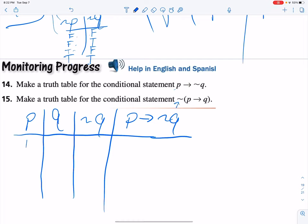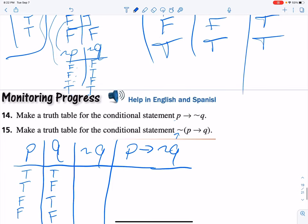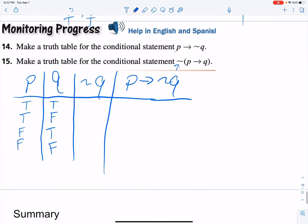So again, P implies Q. Those eight should always be the same: true, true, false, false. And then we have true, false, true, false. We always start with that because those are the possible outcomes. That's what we have to work with from the get-go.